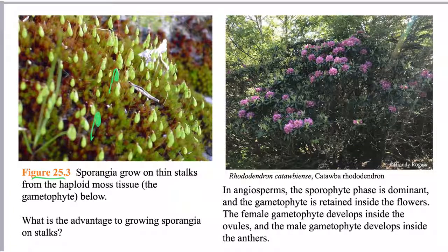In contrast to moss — where the gametophyte is dominant — and ferns — where both phases are visible — in more derived plants like angiosperms, the sporophyte phase is dominant and the gametophyte phase is reduced to just a few cells retained inside the sexual organs of the flowers. The female gametophyte develops inside the ovules, and the male gametophyte, the pollen grain, develops inside the anthers. Yet the same pattern of alternation of generations is happening across all of these plant groups.